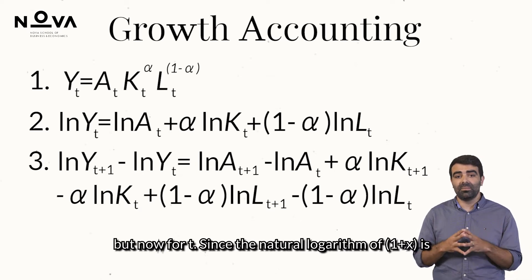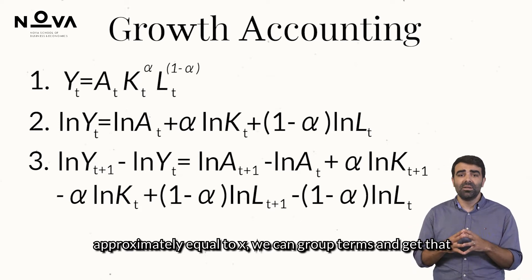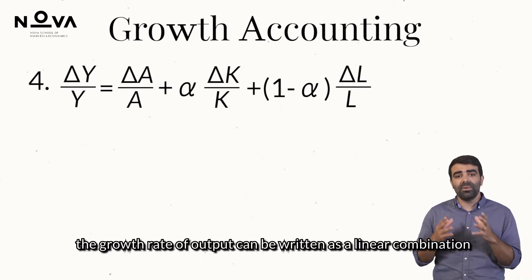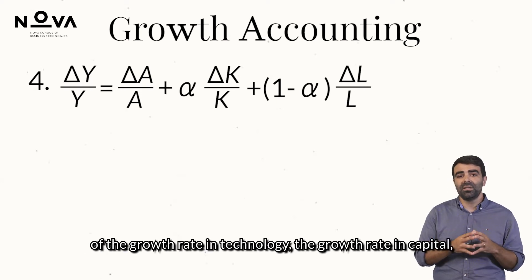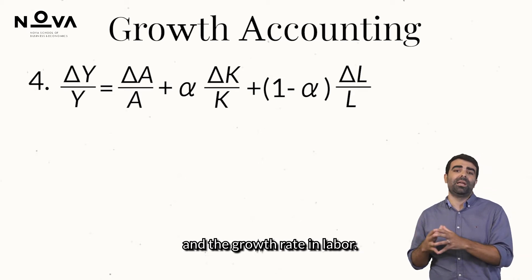Since the natural logarithm of 1 plus x is approximately equal to x, we can group terms and get that the growth rate of output can be written as a linear combination of the growth rate in technology, the growth rate in capital, and the growth rate in labour.